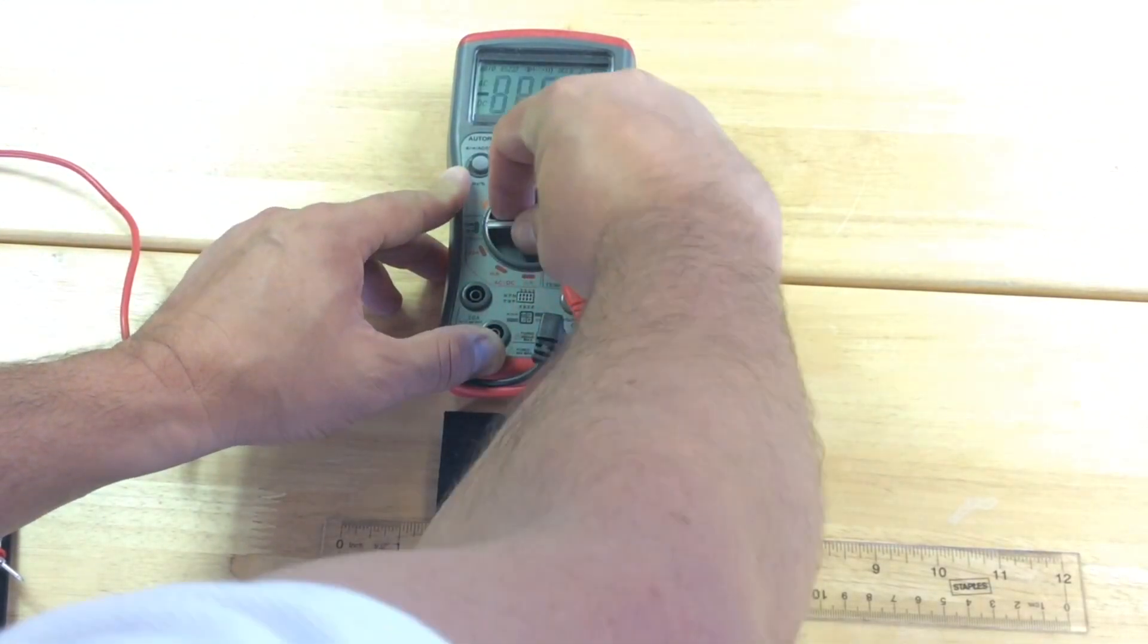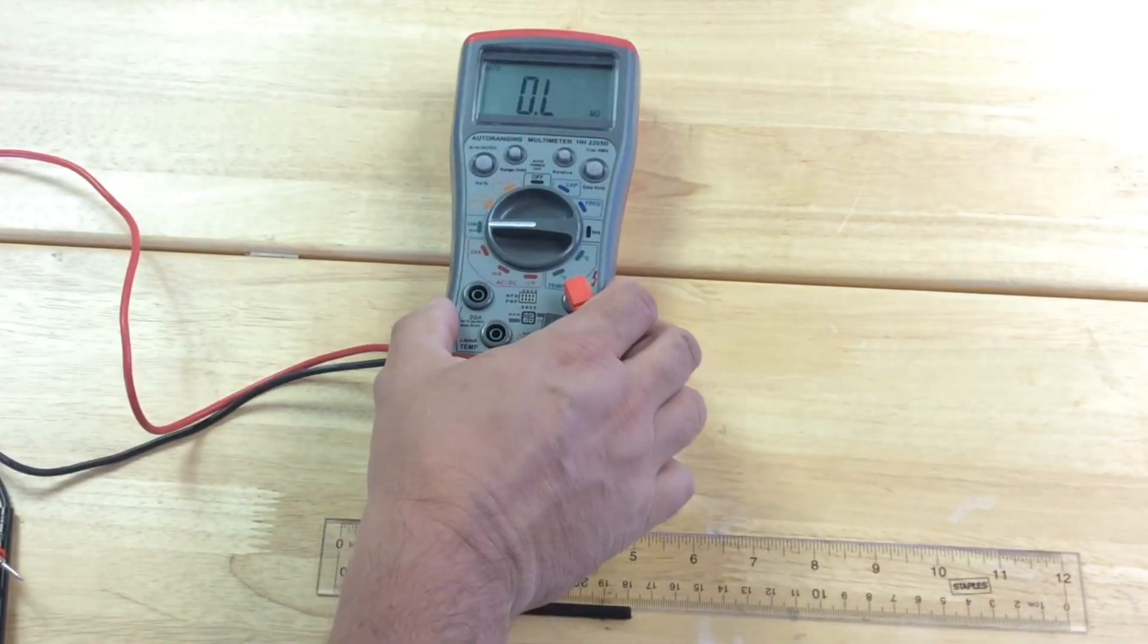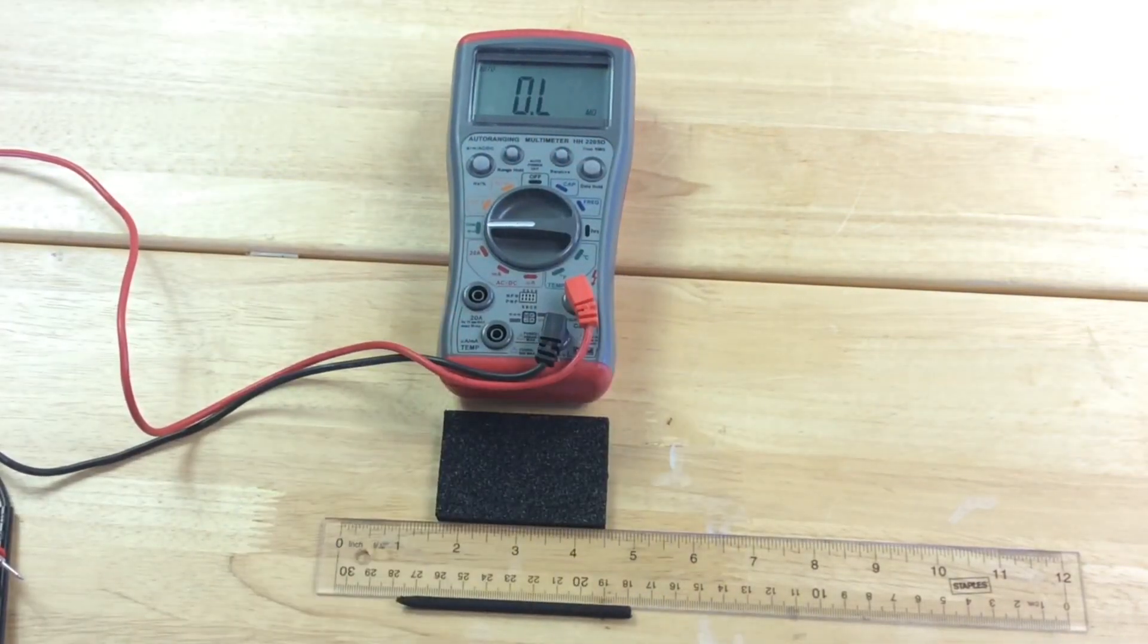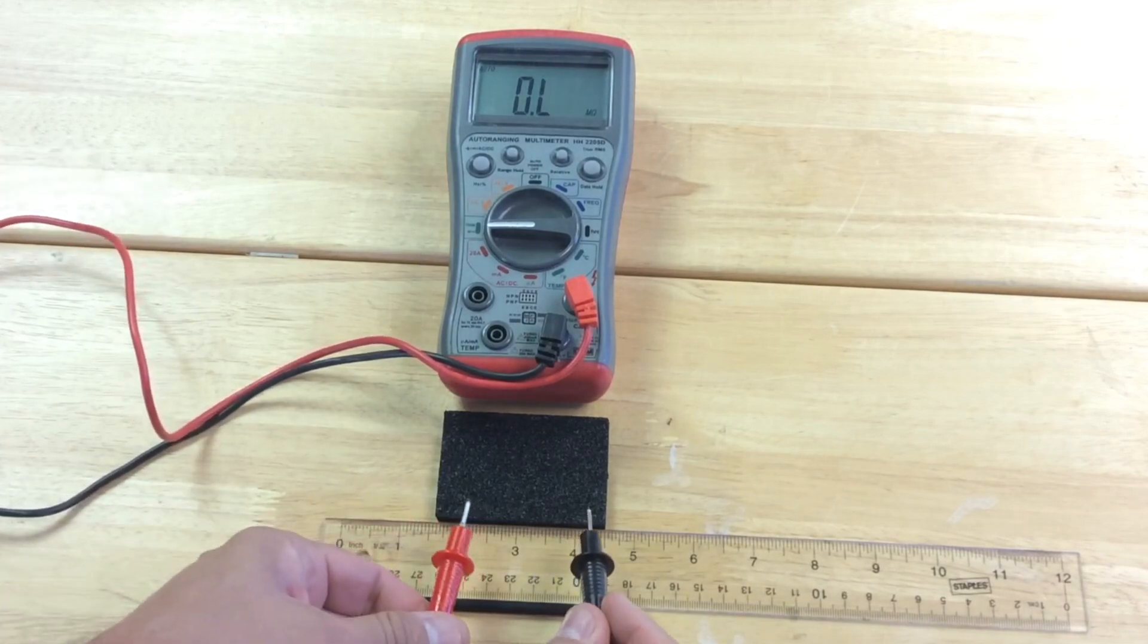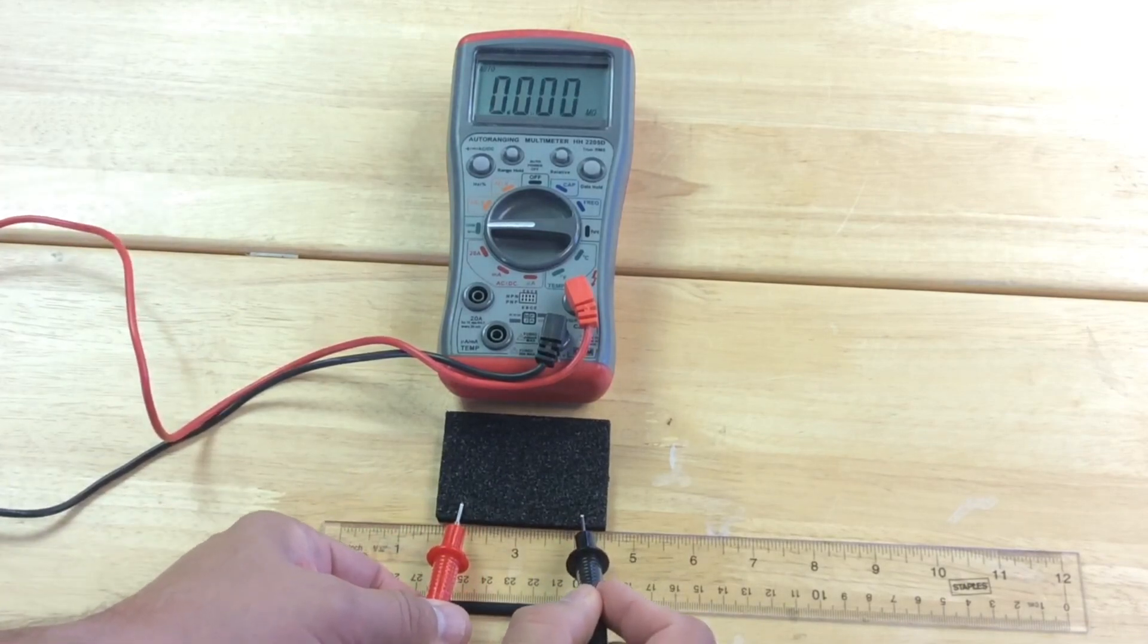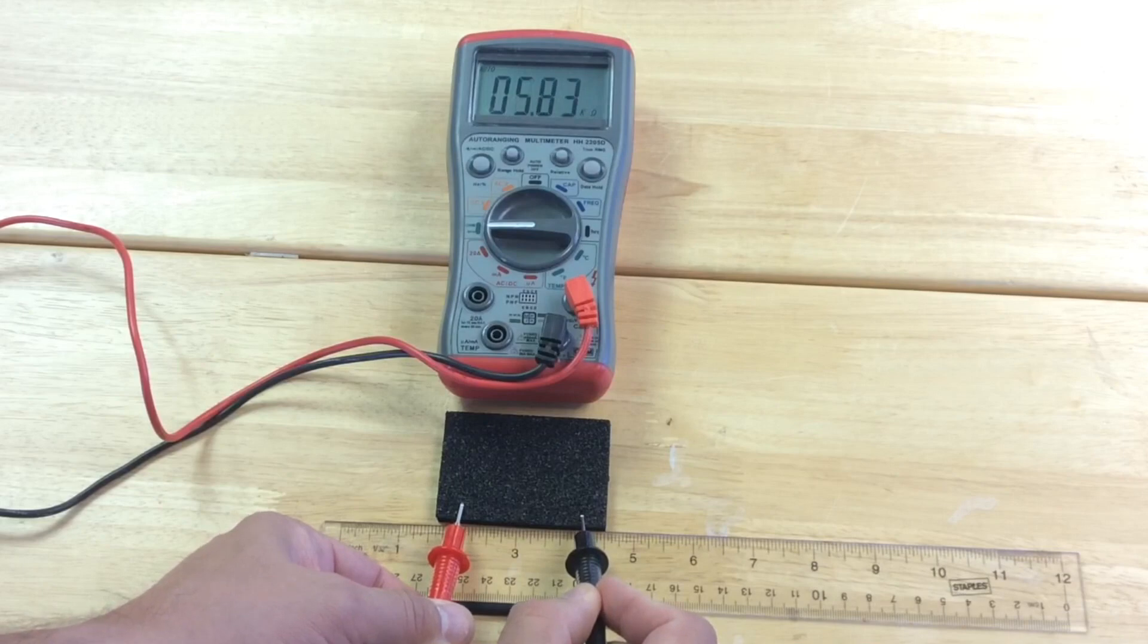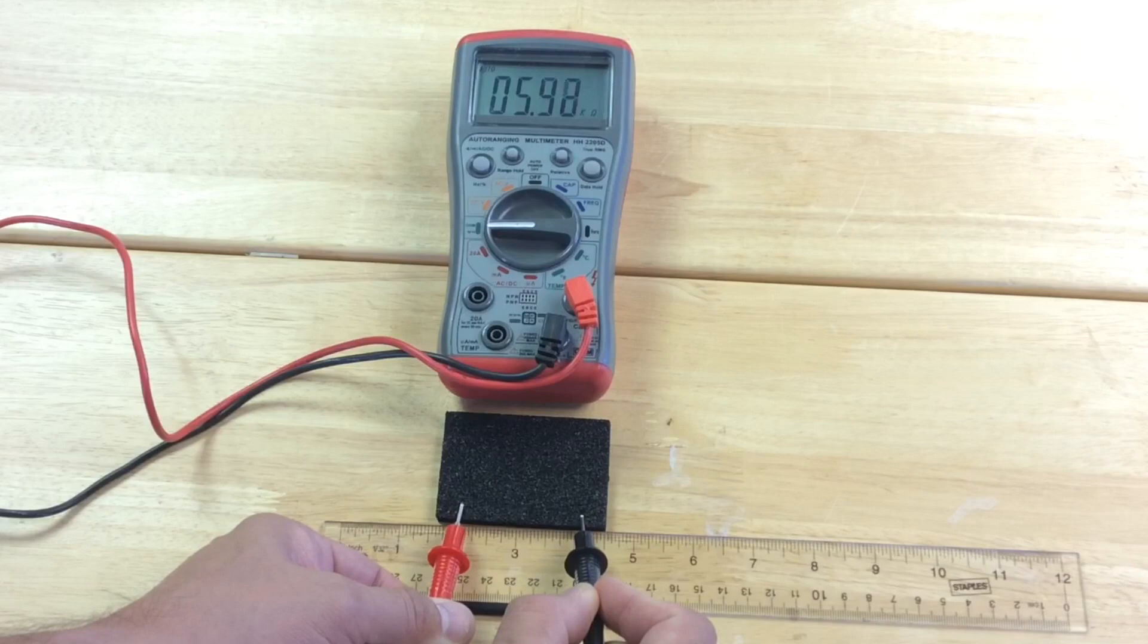So I wanted to measure the resistance so I got out my multimeter, set it to the resistance mode, and then with the probes I put them about two inches apart on the conductive foam because I wanted to see what the baseline was for conductivity on this thing. And it was just under 6k, 6,000 ohms, so about five and a half.